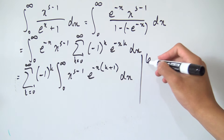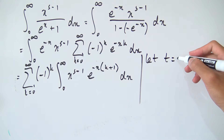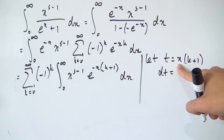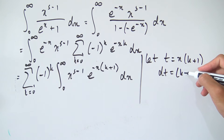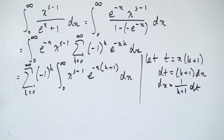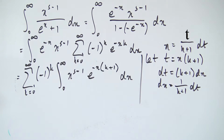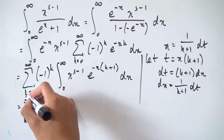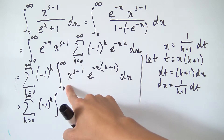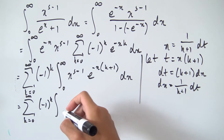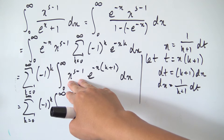Combining the exponential terms, we factor out the negative x to get e to the minus x times k plus 1. This looks almost like a gamma function, so let's introduce a substitution. We let t equal x times k plus 1. Differentiating both sides gives dt equals k plus 1 times dx, which means dx equals 1 over k plus 1 times dt. The bounds are preserved since plugging in x equals 0 gives t equals 0, and x to infinity gives t to infinity.